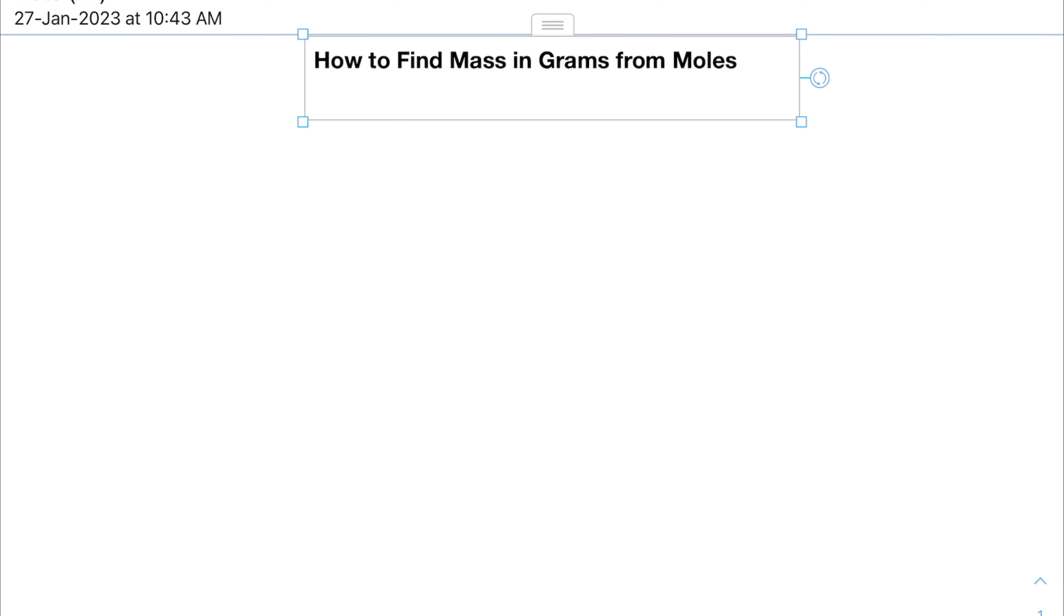Hello everyone, today we are going to learn about how to find mass in grams from moles. Generally, for this we look at the formula which is n (moles) equals mass in grams divided by molar mass in grams per mole. So overall, this formula is n equals m divided by M, where n is the number of moles, m is mass in grams, and M is molar mass.